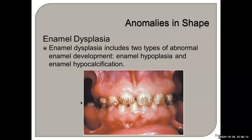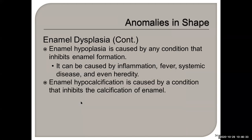Enamel dysplasia — 'dys' meaning something went wrong — includes two types of abnormal enamel development: enamel hypoplasia or enamel hypocalcification. Enamel hypoplasia is caused by any condition that inhibits enamel formation; it can be caused by inflammation, fever, systemic disease, or even be hereditary. Enamel hypocalcification is caused by a condition that inhibits the calcification of enamel. So hypoplasia inhibits enamel formation, and hypocalcification inhibits calcification.